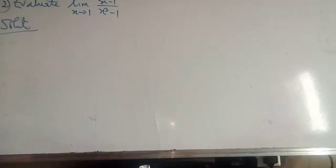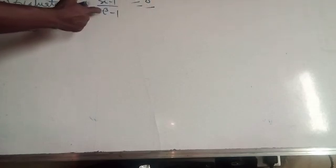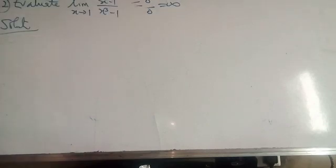The next question: evaluate the limit as s tends to 1 of (s minus 1) all over (s cubed minus 1). Now, if we put s = 1 directly, we get 1 minus 1 = 0 in the numerator and 1 cubed minus 1 = 0 in the denominator — an undefined value, which is wrong. We can carry out an operation here: the denominator has a cubic expression with degree 3, and the numerator has degree 1. Since the degree of the denominator is higher, we can factorize by finding a factor of (s minus 1) in the denominator using long division.